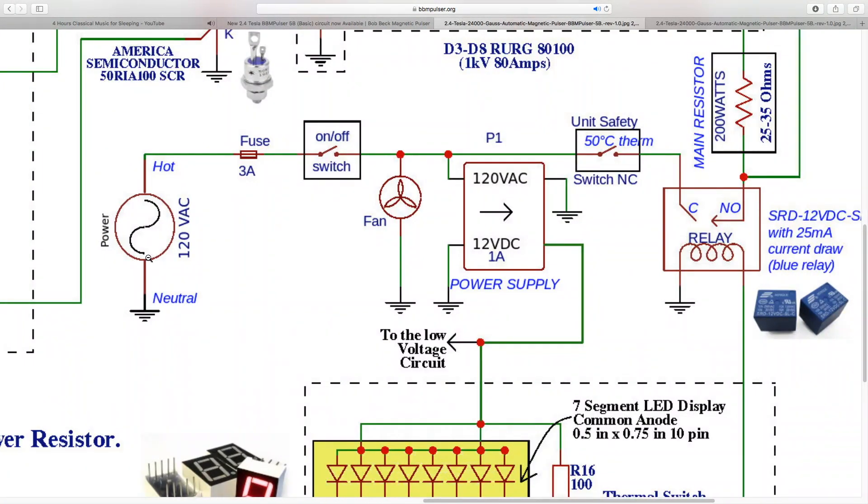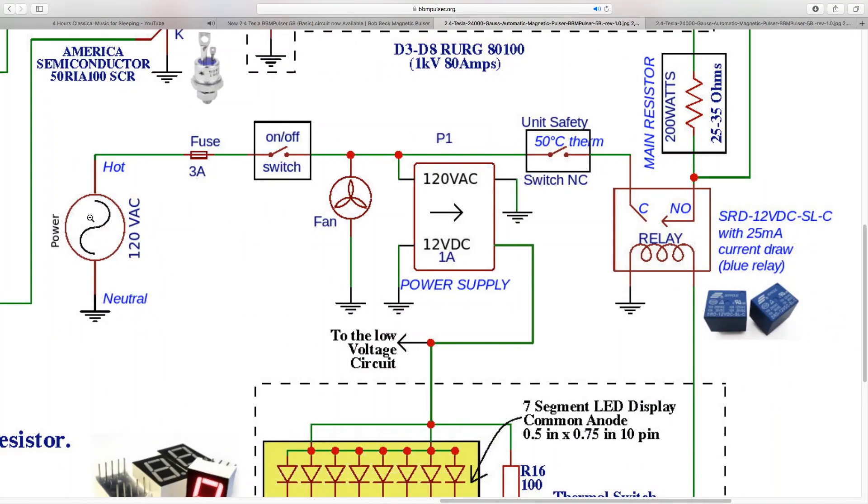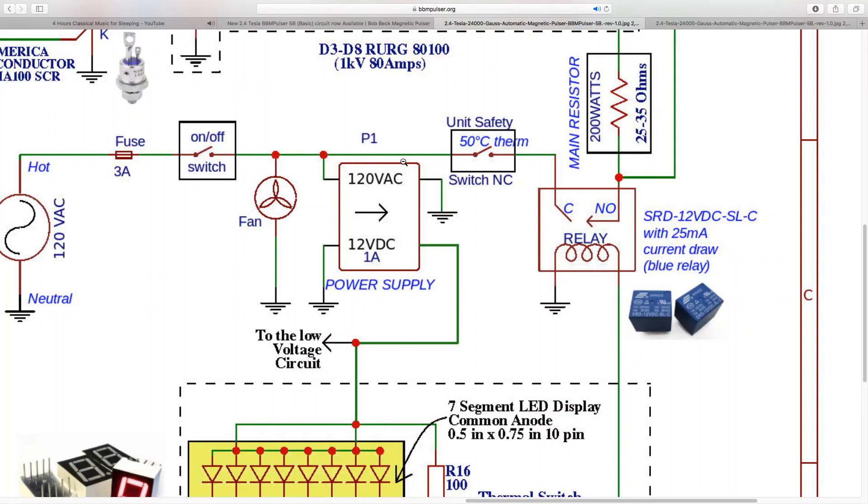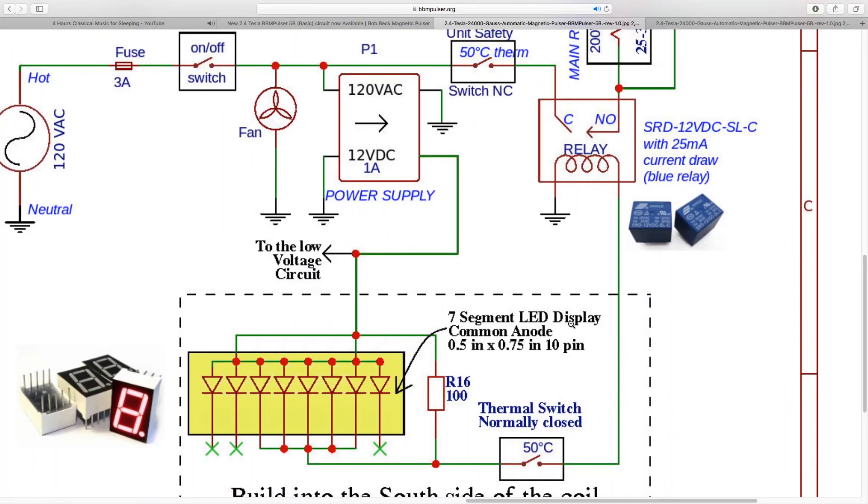This circuit is 120 volt AC. As you can see here, has neutral and hot. Also you will have your ground. Ground does not connect to the neutral. Please make sure ground does not connect to the neutral. Ground connects to the body of the pulsar metal casing and that's about it. In this circuit it's not being used here at all. We have 120 volt AC coming in through the fuse, goes through the on-off switch, feeds 110 volt AC fan. Also it feeds 12 volt DC 1 amp power supply. This power supply is used to feed power into the low voltage circuit as well as seven segment LED indicator that's getting built into the south side of the coil.